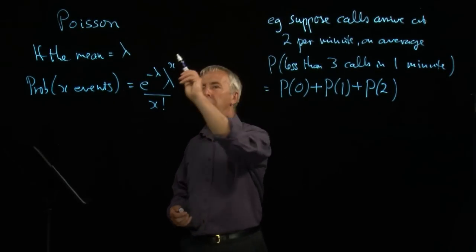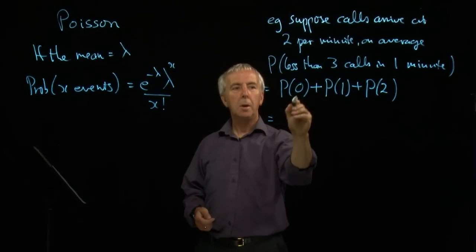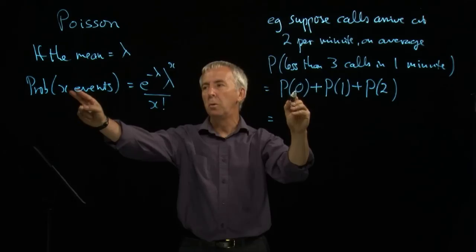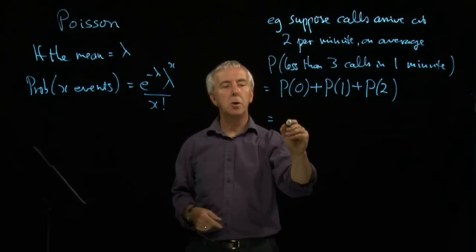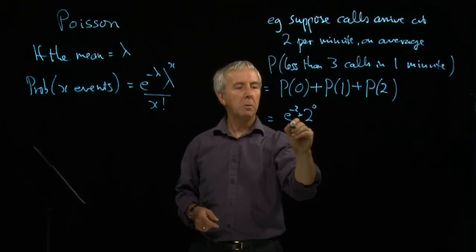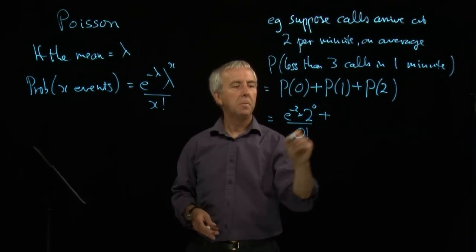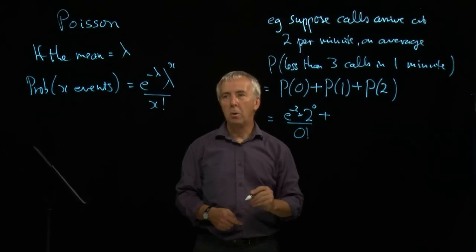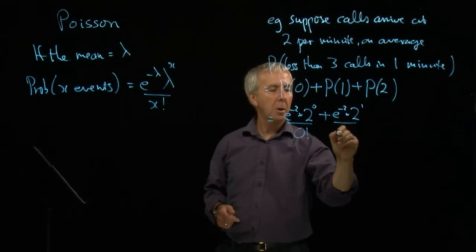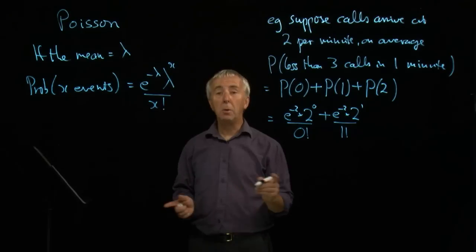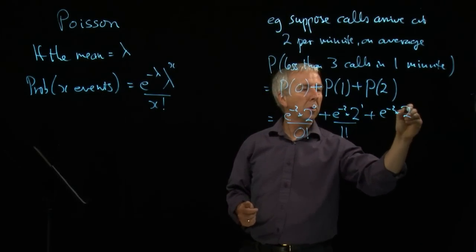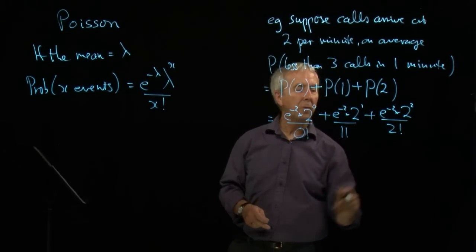So for each of these now, I can use this formula. For no calls, x is zero. I want x events. An event here is a call, so I want none of those. And my mean is two. So it's e to the minus two, two to the zero over zero factorial. Then I want one call. This is still e to the minus two, then it's two to the one over one factorial. And then I want two calls. So it's e to the minus two, two squared over two factorial.